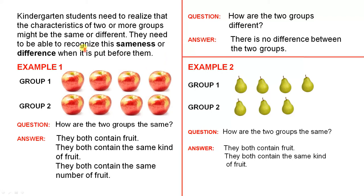Here's a very basic example. Group 1 has 4 apples. Group 2 has 4 apples. This is the question that can be asked: how are the two groups the same?